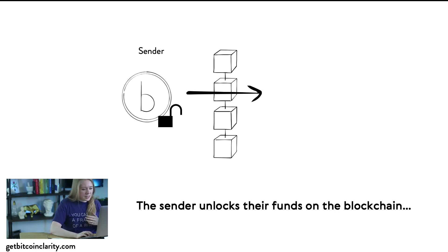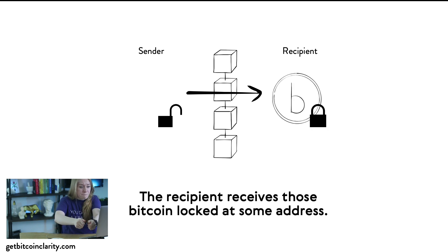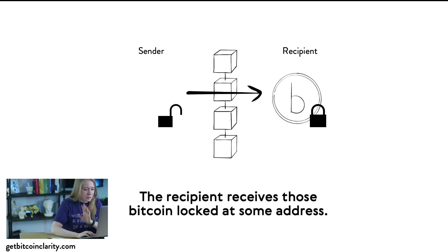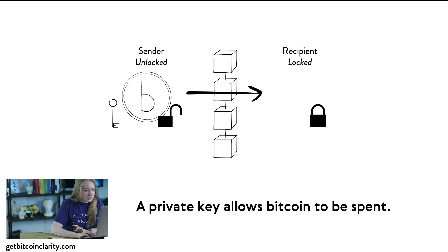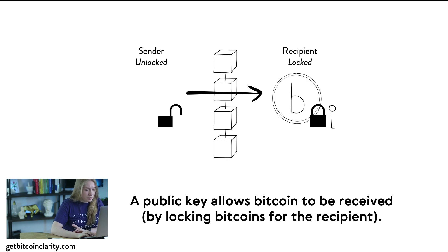Then I lock that same Bitcoin up for you using your public key, and all this happens on the blockchain. In Bitcoin, locking and unlocking is the same function as sending and receiving. A private key allows Bitcoin to be spent; a public key allows Bitcoin to be received by locking bitcoins for the recipient.